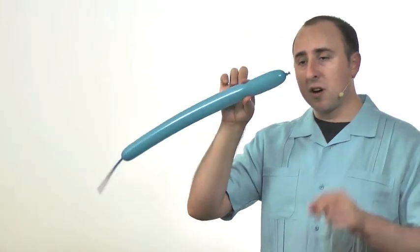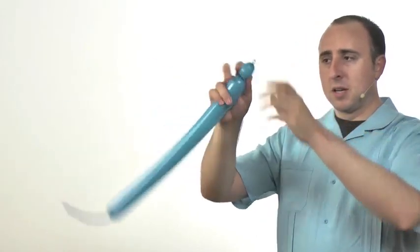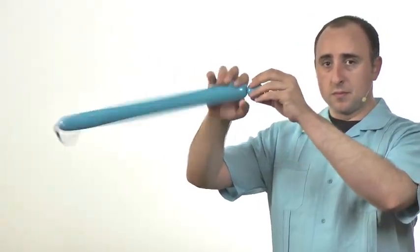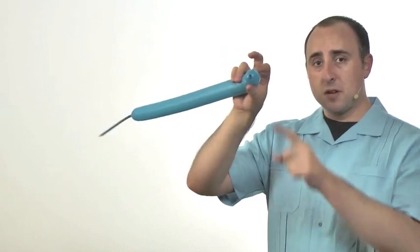First we're going to start off by twisting a small bubble, about one inch. That's going to be the nose of the teddy bear.